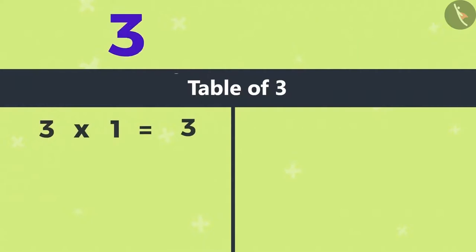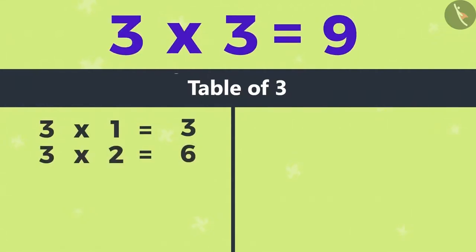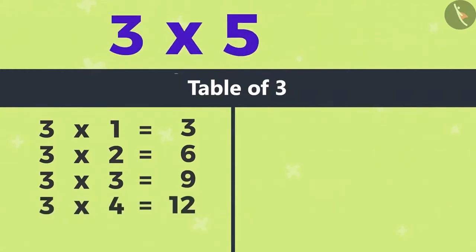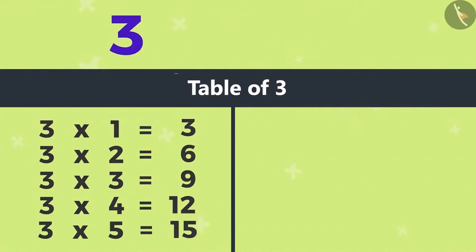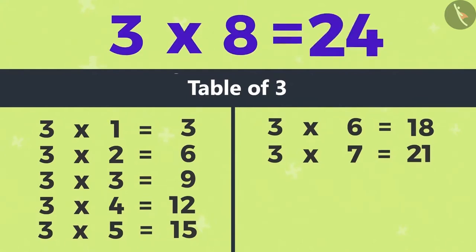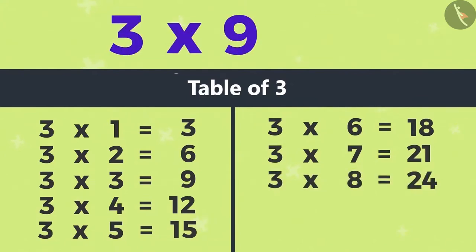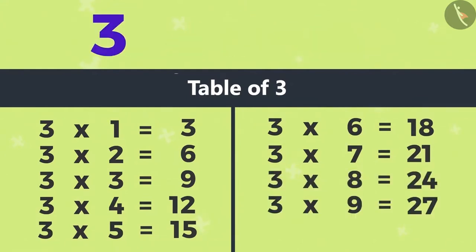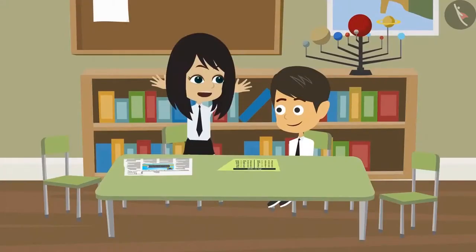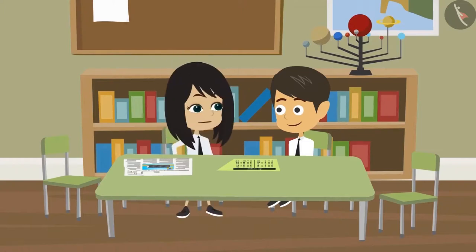Three ones are three. Three twos are six. Three threes are nine. Three fours are twelve. Three fives are fifteen. Three sixes are eighteen. Three sevens are twenty-one. Three eights are twenty-four. Three nines are twenty-seven. Three tens are thirty. This is very interesting. This way anyone can remember the multiplication of three.